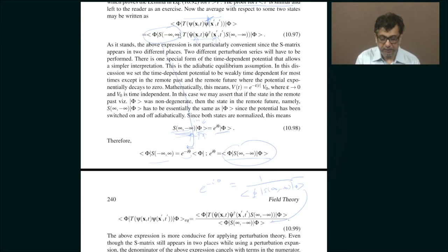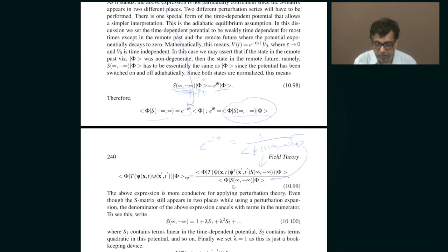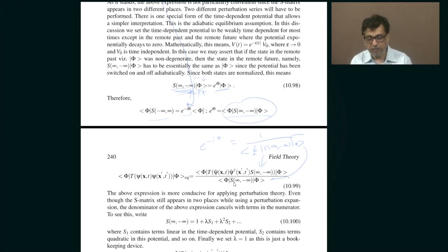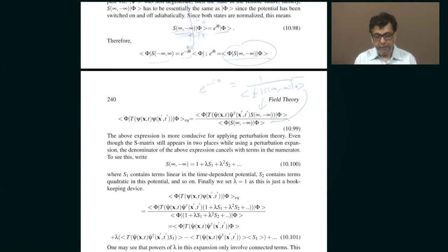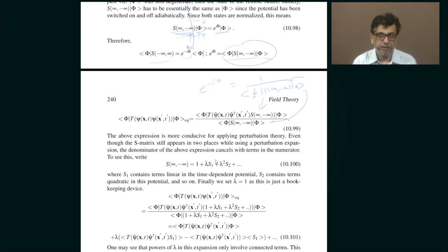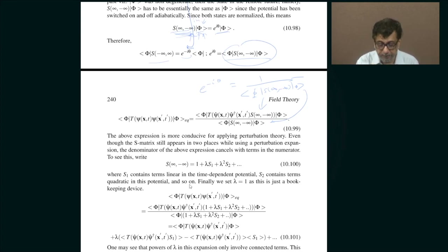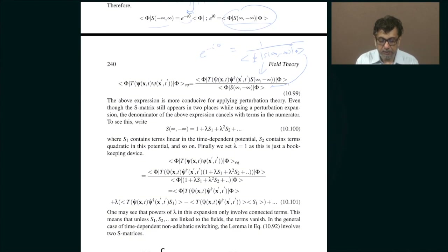What I have done is basically written this as 1 over that, and now the numerator has only one S-matrix. You might think, so what? — the denominator has another, so you are back to square one with 2 S-matrices. But this interpretation is very convenient even though superficially there remain 2 S-matrices, one in the numerator and one in the denominator. Imagine there is a lambda next to that V, your time-dependent perturbation — it is just a bookkeeping device telling you how many V's you are dealing with. Lambda squared means two V's; later you can set lambda equals 1.